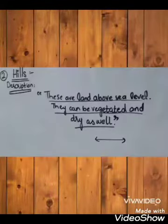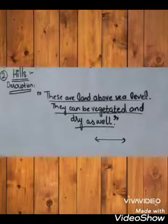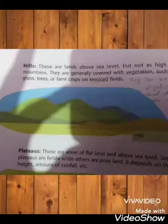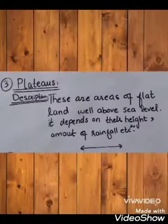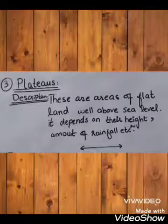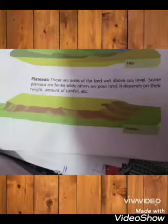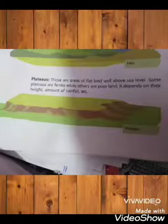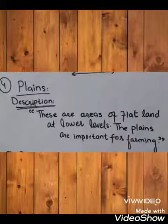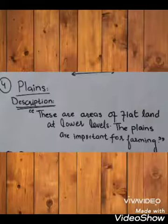Next is hills. These are land above sea level. They can be vegetated and dry as well. Next is flat land — these are areas of flat land well above sea level. It depends on their height, amount of rainfall, etc. Next is plains — these are areas of flat land at a lower level. The plains are important for farming.